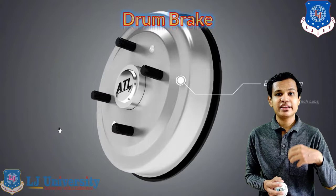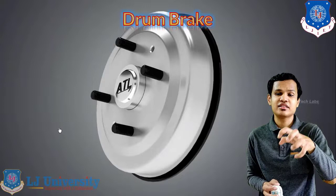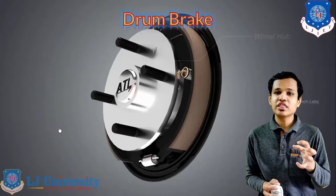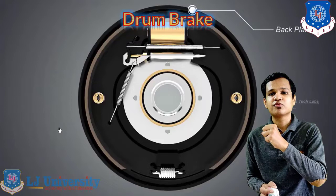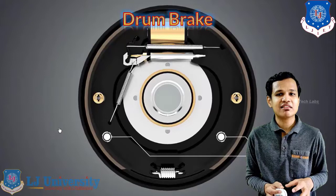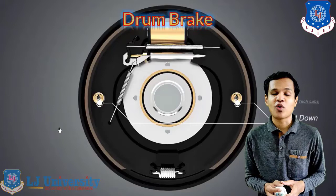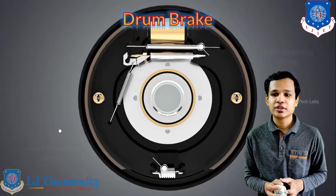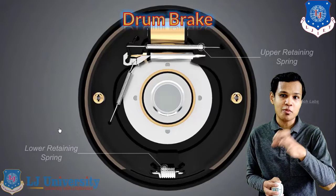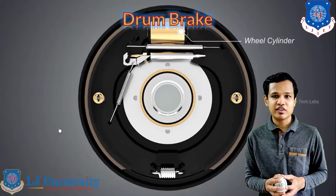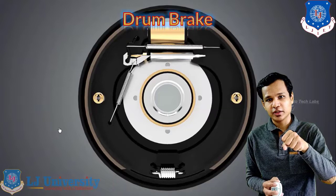The first type is the drum brake, also called an internally expanding brake. Inside the drum, the wheel hub is given, and on the wheel hub we attach the back plate. On the back plate we have two brake shoes which expand internally. Two brake linings are attached to the brake shoes, and springs hold the shoes down to the back plate. Two retaining springs operate when the brake releases, and a wheel cylinder is placed in between for operating the brakes.